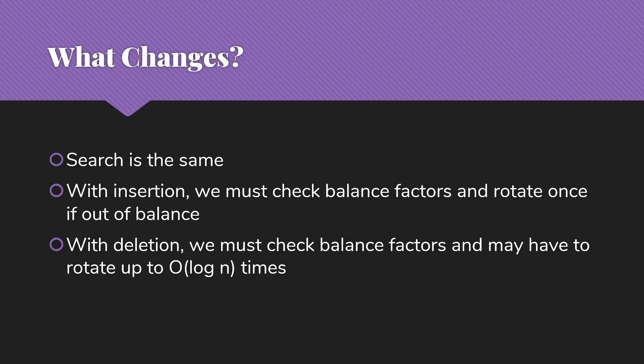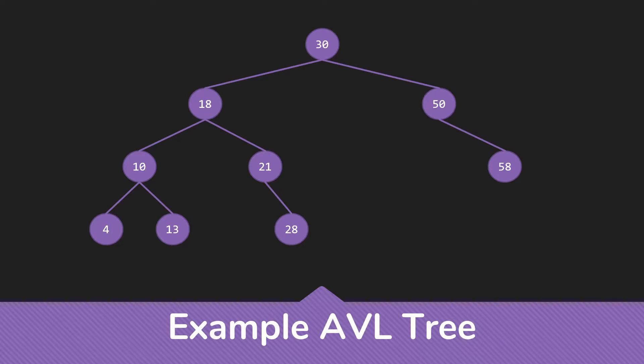So let's look at how this actually works and what I mean by this rotation thing. So here's an example AVL tree. It's not a perfectly balanced tree by any means, but it does meet the AVL rules. The height of the left and right subtrees differ by only one. And if we look at each node in the tree, its left and right subtrees differ by no more than one. So we have an AVL tree.